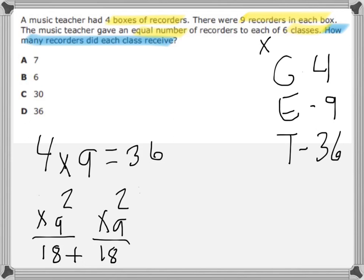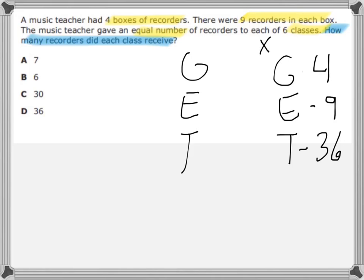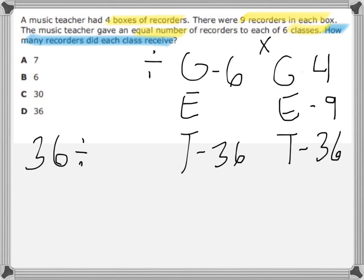However, the question is asking how many recorders each class received, not how many total recorders he passed out. So that takes us back — he gave his recorders to his six classes, an equal number to each class. Let's do another G-E-T. We know he has thirty-six total recorders, and he's splitting them up equally to six classes. Since the total is being split up equally into groups, we are going to divide: thirty-six divided by six.